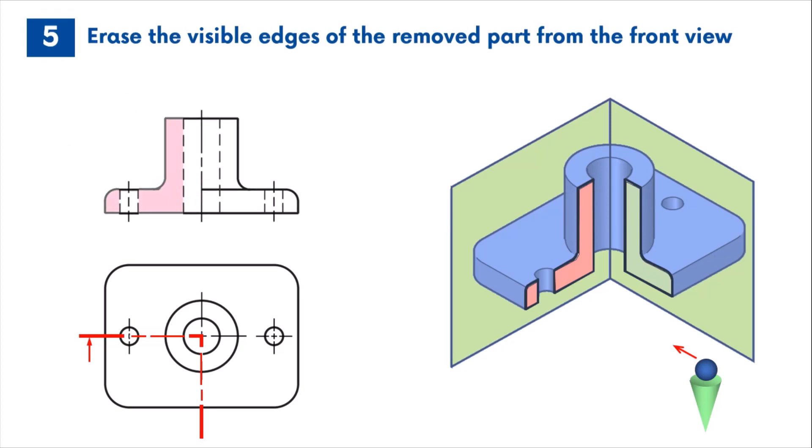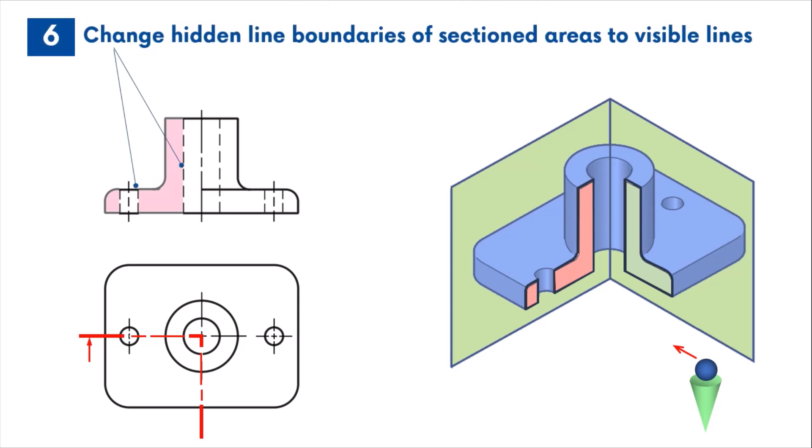Next, the hidden line boundary of the section areas will be changed to visible lines, as these edges are now exposed to the observer.